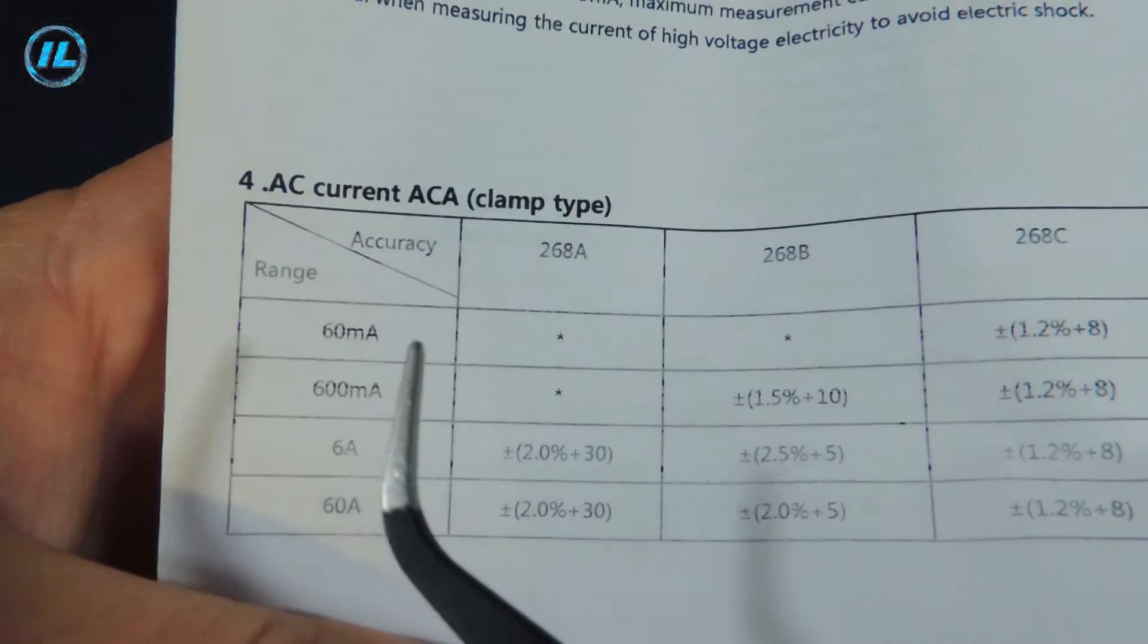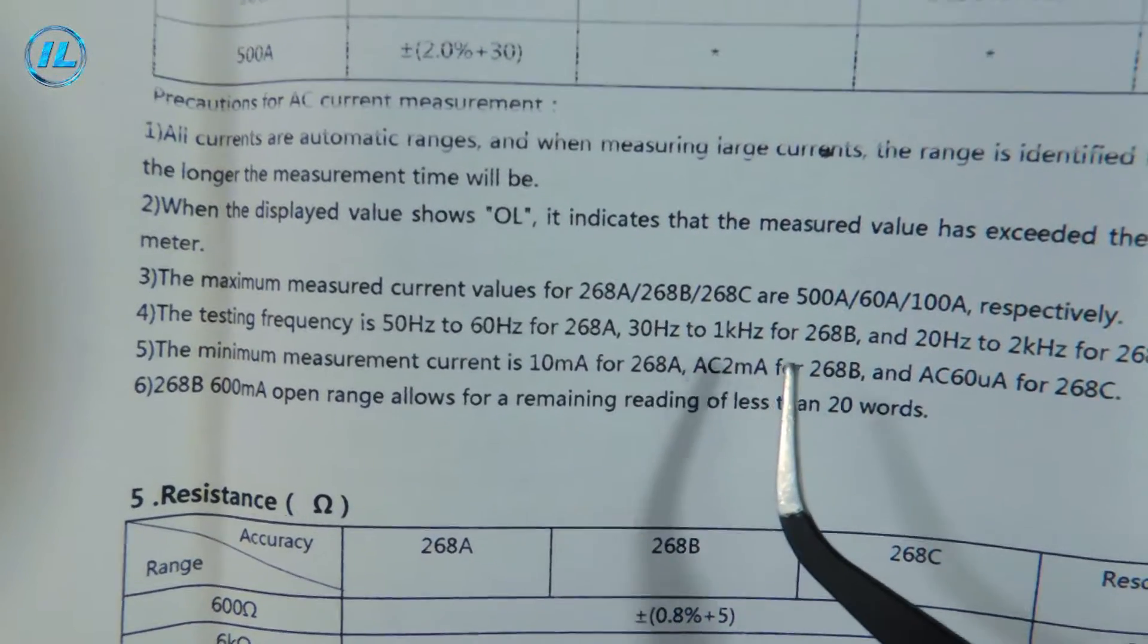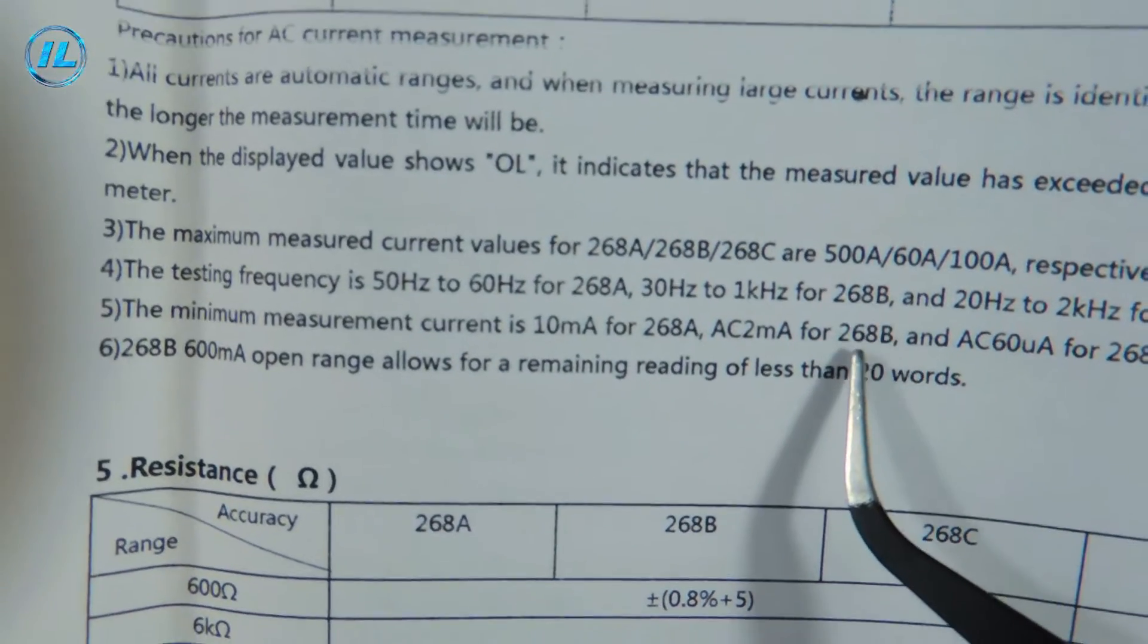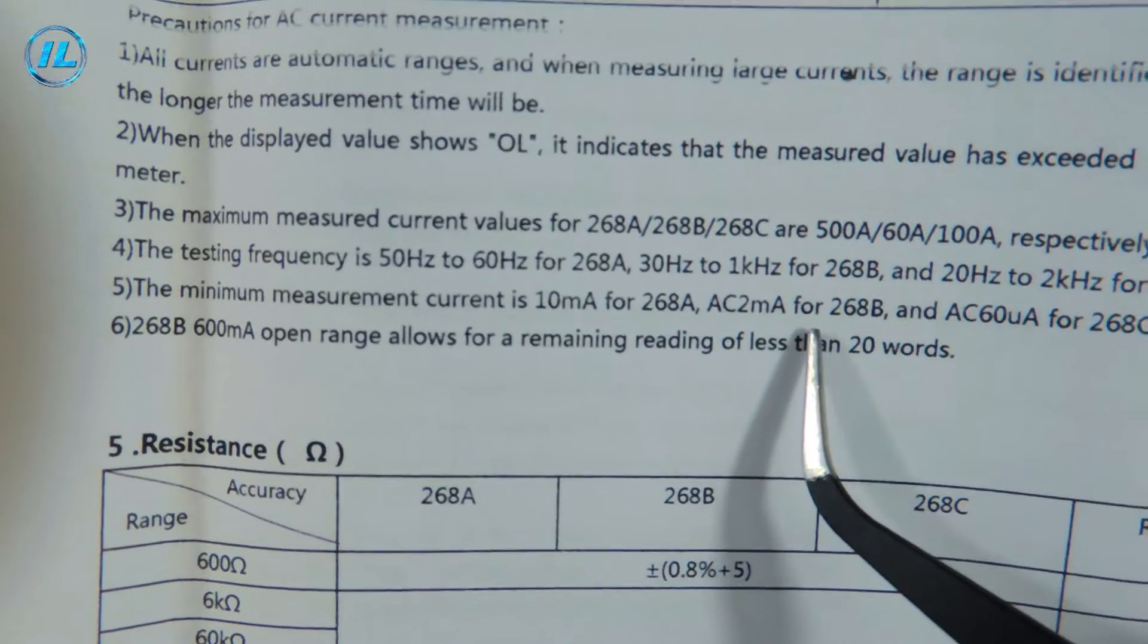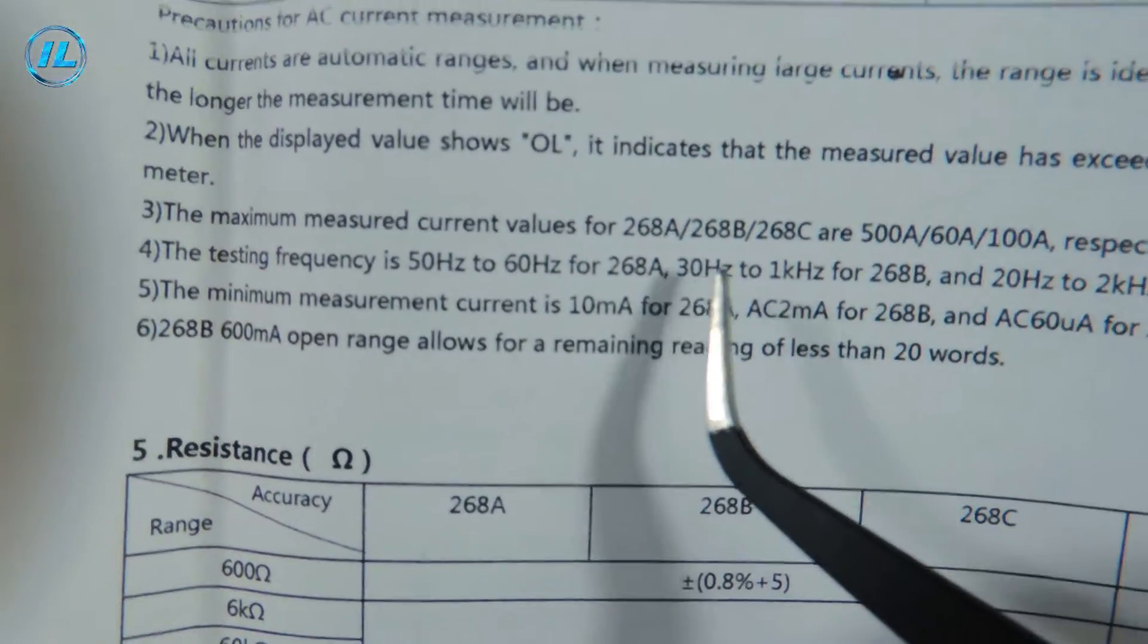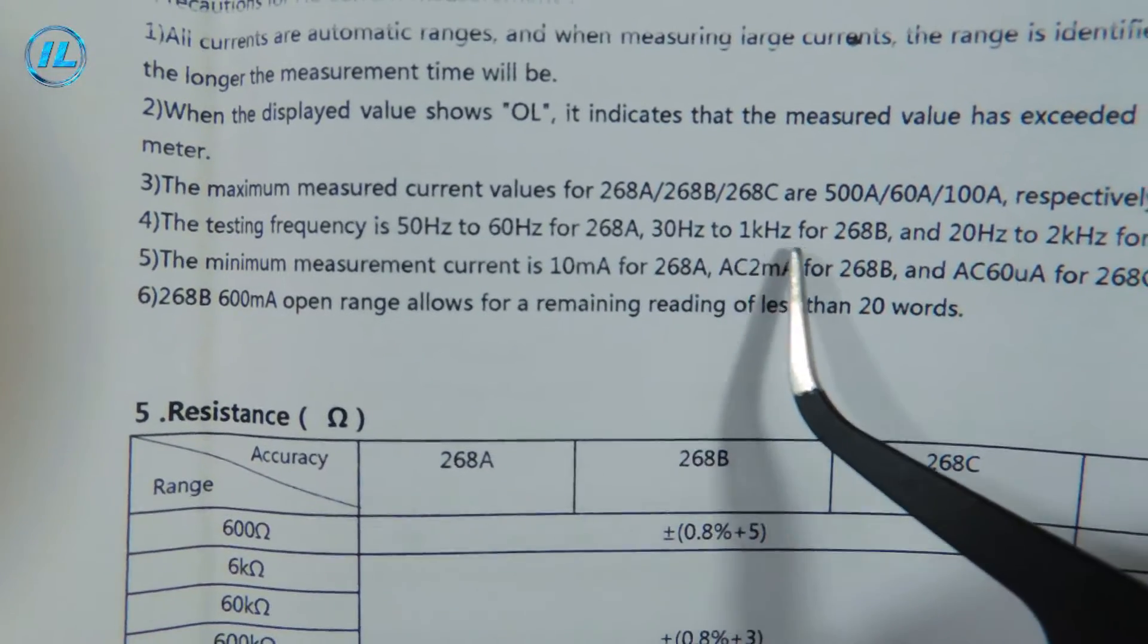Then the measurement of alternating current, also up to 60 amps. The minimum alternating current that this model of the device can measure, namely 268B, is only 2mA. Not every current clamp can boast of such parameters. The frequency range in the AC measurement mode is from 30 Hz to 1 kHz.